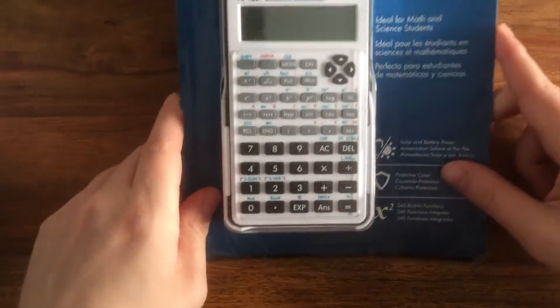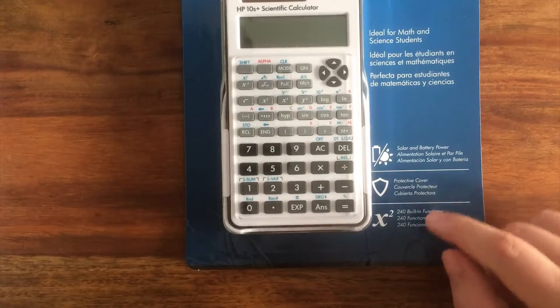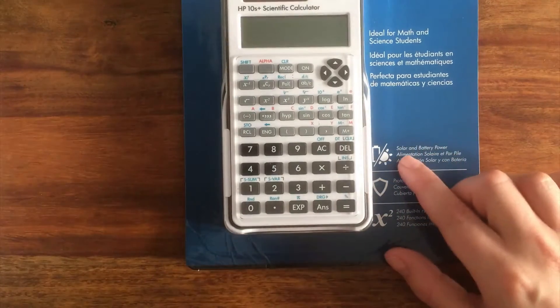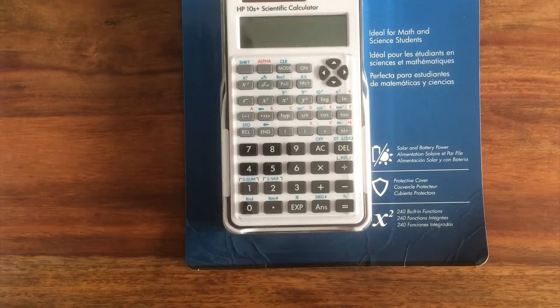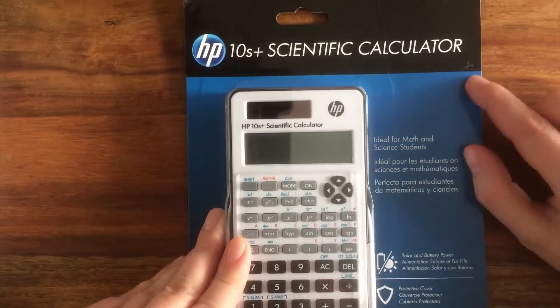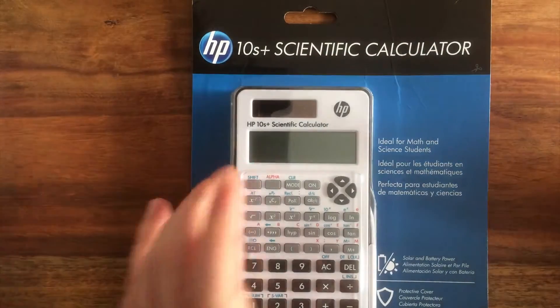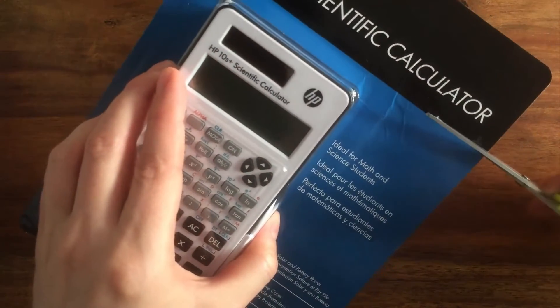About 240 built-in functions it states here, and protective cover, solar and battery power, so that's good for the longevity of use for your calculator there. Okay, so it appears that you can cut across here to help you get into the calculator. So let's just try that now.